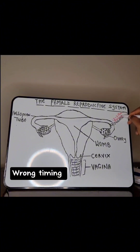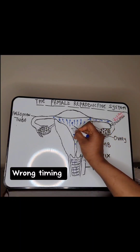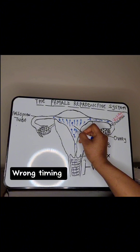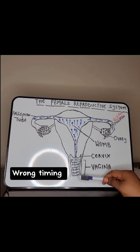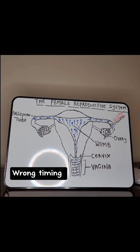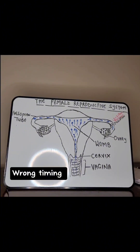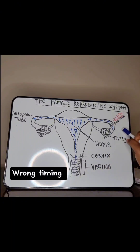Sperm cells can live in the body of a woman for about three to five days. Having sex on your ovulation day leaves you with just 12 to 24 hours to get the egg fertilized. But having sex two or three days before ovulation means you will have sperm cells ready and waiting for the egg to be released. Note that sperm cells won't go straight to the egg — they must first undergo something called capacitation.